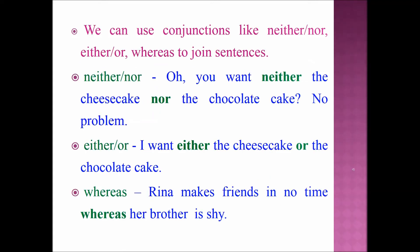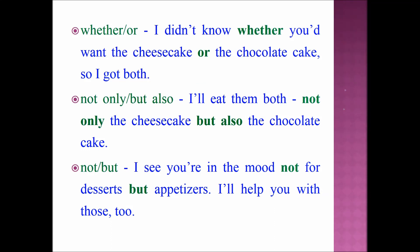We can use conjunctions like neither/nor, either/or, and whereas to join sentences. NEITHER/NOR example: 'You want neither the cheesecake nor the chocolate cake? No problem.' EITHER/OR example: 'I want either the cheesecake or the chocolate cake.' WHEREAS example: 'Reena makes friends in no time whereas her brother is shy.' WHETHER/OR example: 'I didn't know whether you wanted the cheesecake or the chocolate cake.'